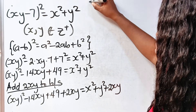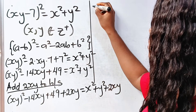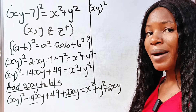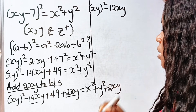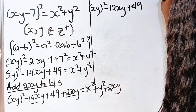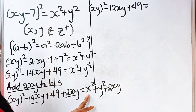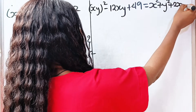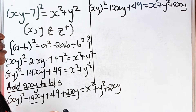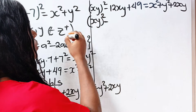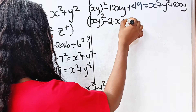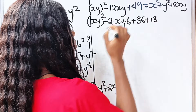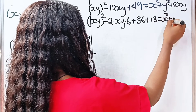Let's solve further. We have (xy)² and -14xy + 2xy gives us -12xy, then plus 49, is equal to x² + y² + 2xy. Now, -12xy is the same as 2 multiplied by xy multiplied by 6. And 49 can be written as 36 plus 13. So: (xy)² - 2·(xy)·6 + 36 + 13 = x² + y² + 2xy.